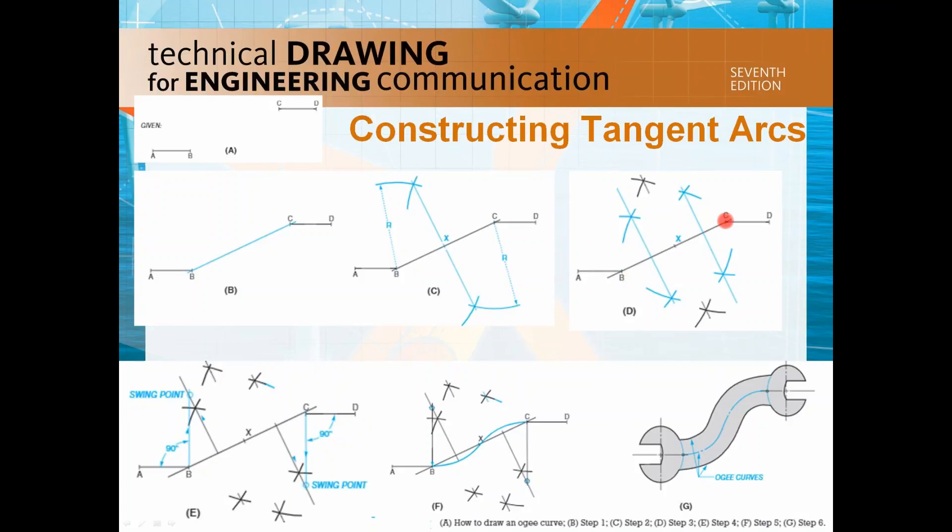And then once you bisect this BC, you do the same thing and bisect BX and XC. So that intersection point here, you call it X and now you do another bisector at XC.